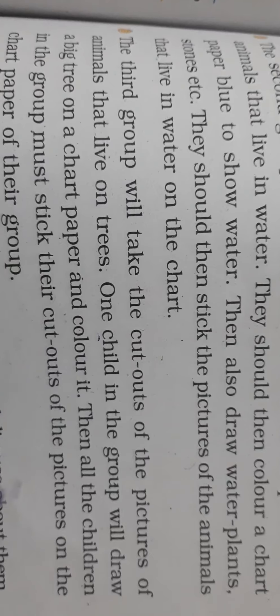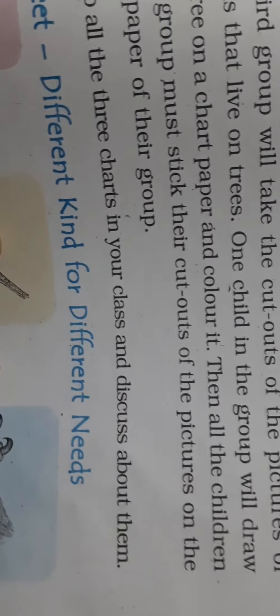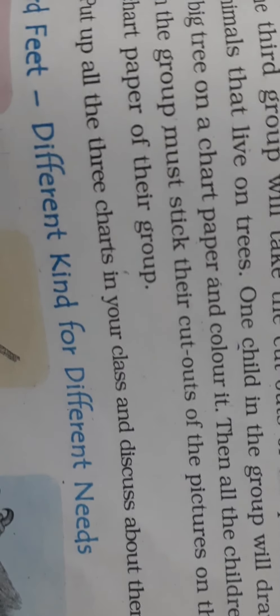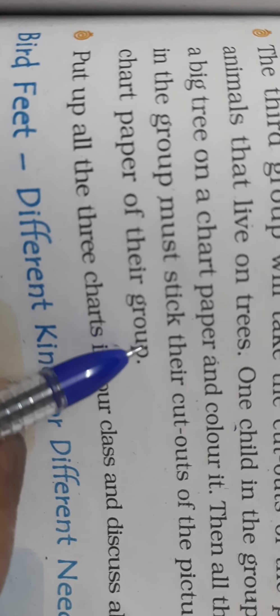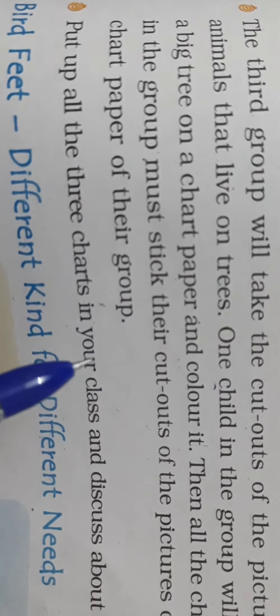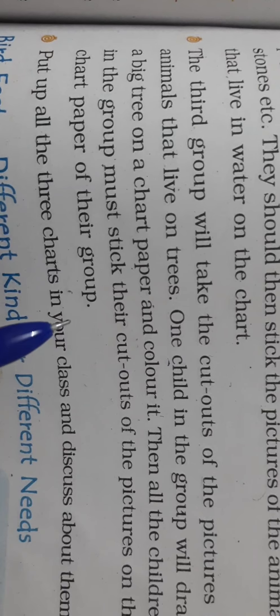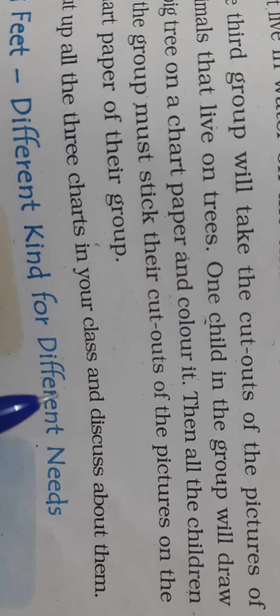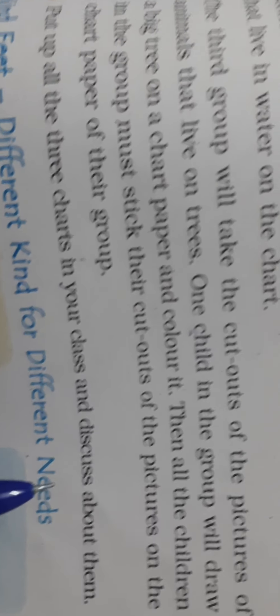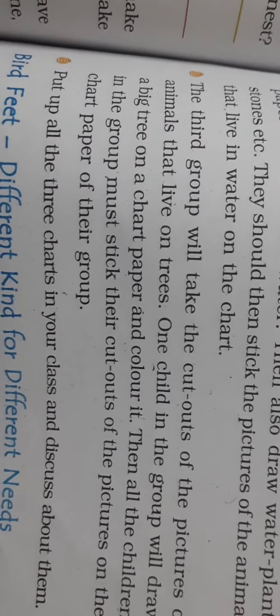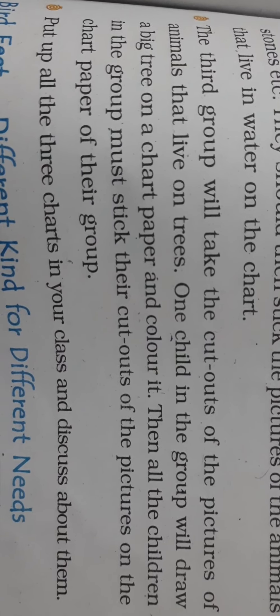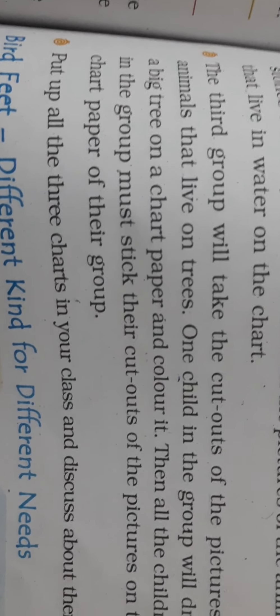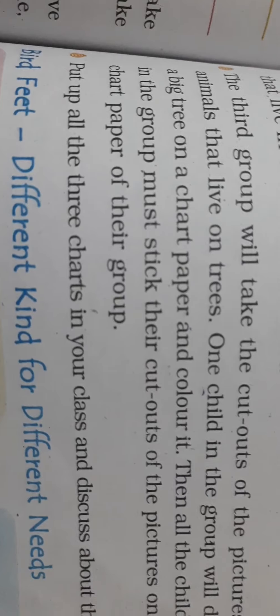One child in the group will draw a big tree on a chart paper and color it. Then all the children will take the pictures of the animals — each child in the group must stick their cut-out picture on the chart paper of their group. Put up all the charts in your class and discuss about them.